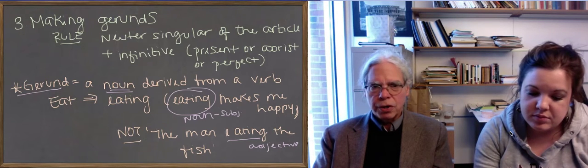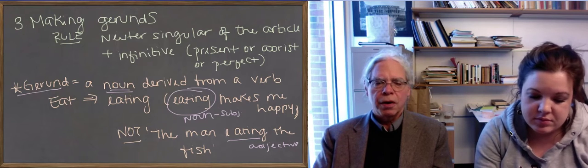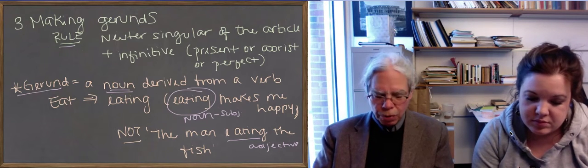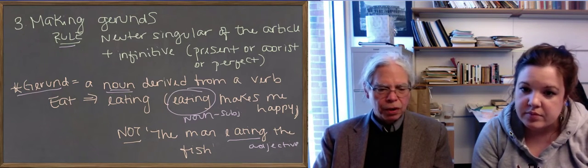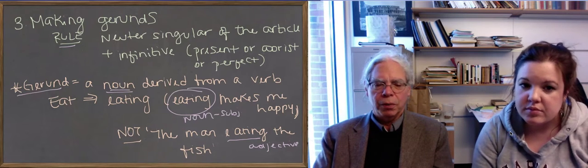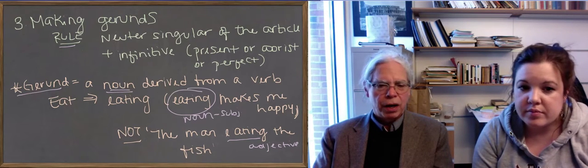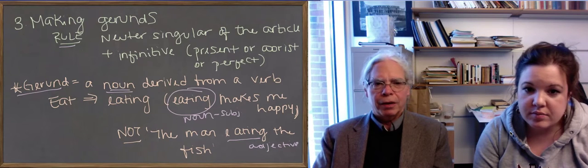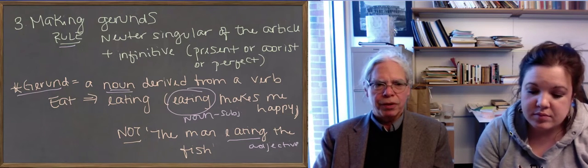So the rule is given there. You start with the neuter singular of the definite article. So to, to, rather, to, and ta. Those are the forms of it. And to it, you add an infinitive. And let's show you some examples of this.